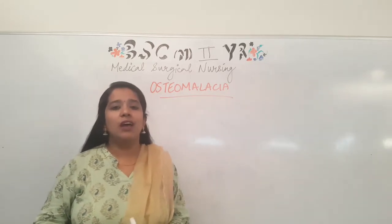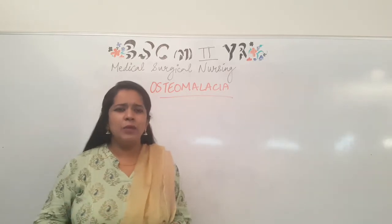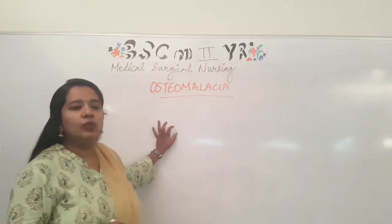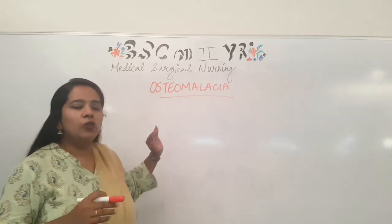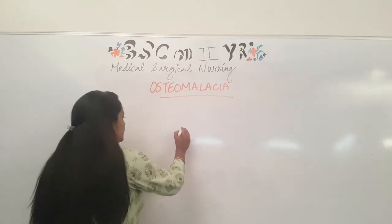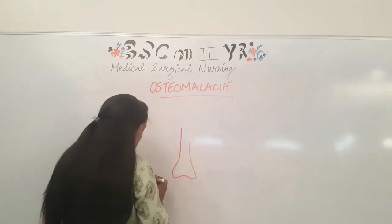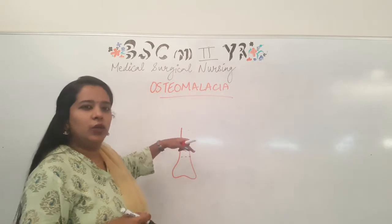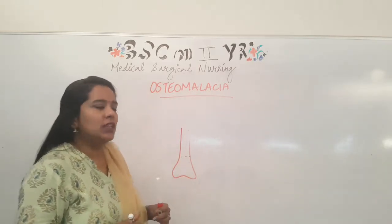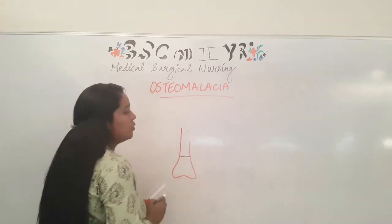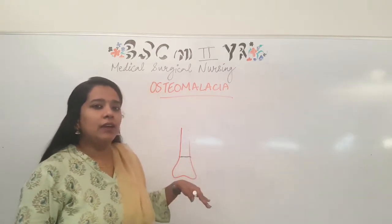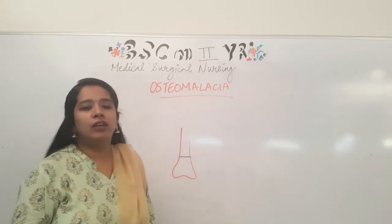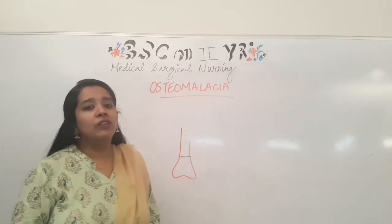What does Osteomalacia do in a bone? Let's understand the basics. Children have growth in the bone. If this is an epiphysis, this plate grows here. Once the growth becomes closed, this is the closure of the epiphysis plate. If we talk about the softening of the bone before closure, we call it rickets. After the epiphysis plate closes — in the case of adults — if we talk about vitamin D deficiency, then we call it Osteomalacia.